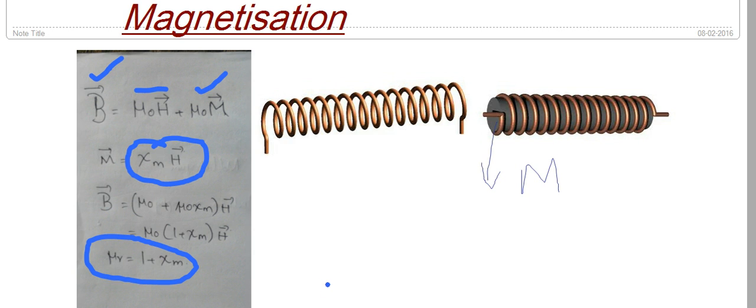And the overall B is changed by introducing the material using νR. That is, B is μ₀ into νR into H. When I don't introduce any material, then that νR value will be 1 because χM is 0, and I get only the magnetic flux density due to this one.